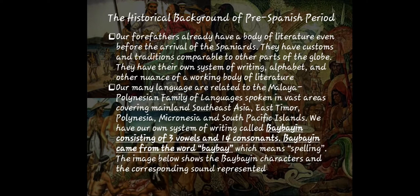Our remaining languages are related to the Malayo-Polynesian family of languages spoken in a vast area covering mainland Southeast Asia, East Timor, Polynesia, Micronesia, and the South Pacific Islands. We have our own system of writing called Baybayin, consisting of three vowels and 14 consonants. Baybayin came from the word 'baybay,' which means spelling. The image shown presents the Baybayin characters and the corresponding sounds they represent.